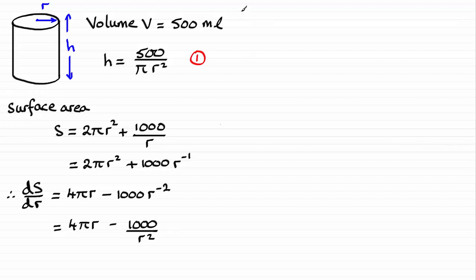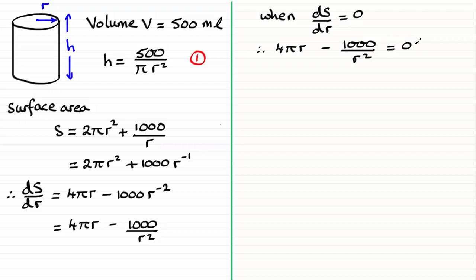Now we need to look at when we make ds by dr equal to 0. That's when we have a stationary point, and in this case this stationary point is going to be a minimum. So when ds by dr equals 0, we therefore have that our equation 4pi r minus 1000 over r squared is going to equal 0. And I feel it's a good idea at this stage to multiply throughout by r squared, and you're going to get 4pi r cubed minus 1000 equals 0.